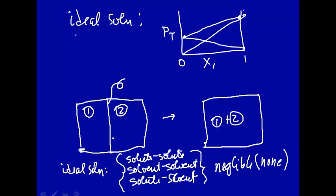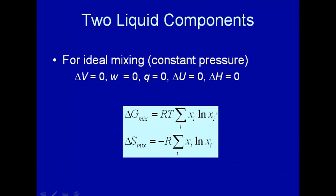that means that the volume, for example, if you have 100 milliliters here and 100 milliliters here, when you remove the partition, with no interaction, you should end up with 200 milliliters. So the volume of mixing should be 0 if you have ideal solutions.